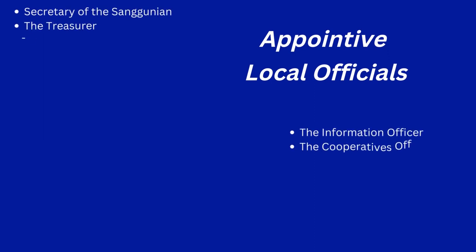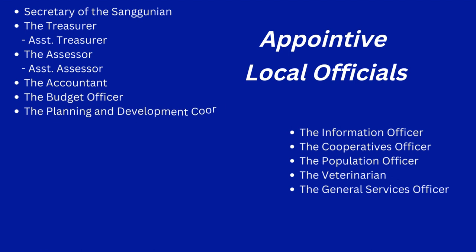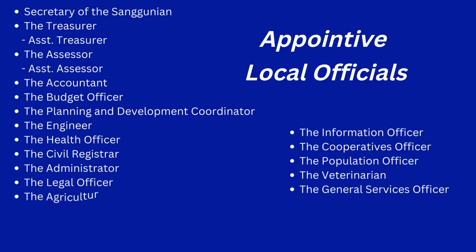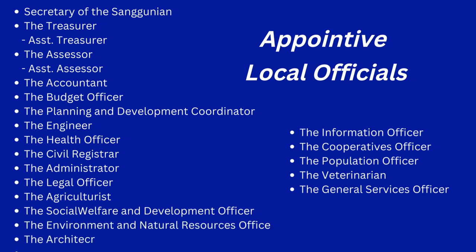For the appointive officials of the LGU who will render basic services to their constituents, these are: secretary of the Sanggunian, treasurer, assistant treasurer, assessor, assistant assessor, accountant, budget officer, planning and development coordinator, engineer, health officer, civil registrar, administrator, legal officer, agriculturist, social welfare and development officer, environment and natural resources officer, architect, information officer, cooperatives officer, population officer, veterinarian, and general services officer. Some appointive positions are optional, depending on the income of the unit as provided in the LGU code.